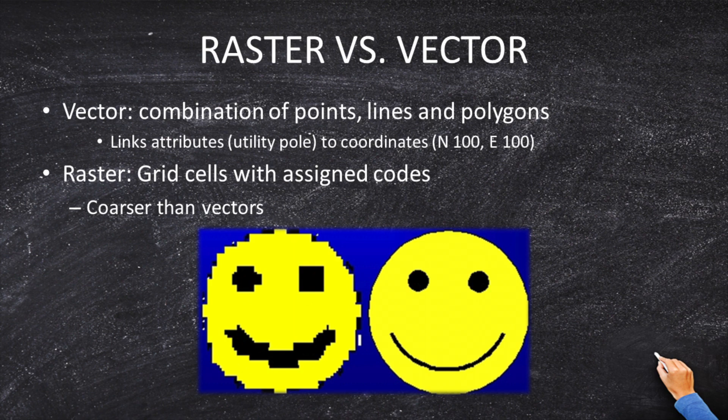A raster is nothing more than a series of cells. In this smiley face, I've got some black cells, some blue cells, and some yellow cells. I'm just going to fill in these colors — one is blue, two is black, and the three value is yellow. The problem is that the bigger the cells, the coarser the data. My left eye is very coarse with big blocks, while my right eye is very fine. The more cells you have, the greater the accuracy and the greater the precision.